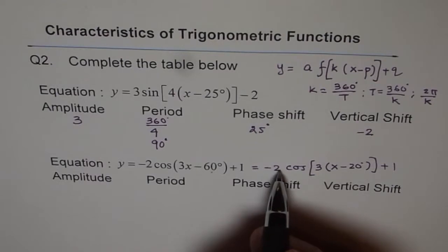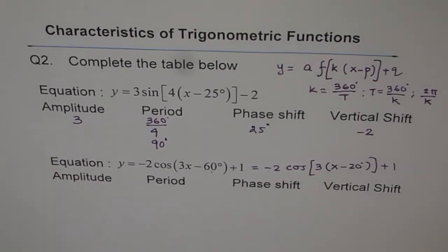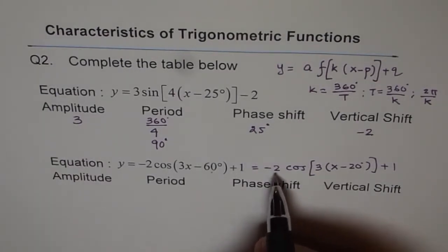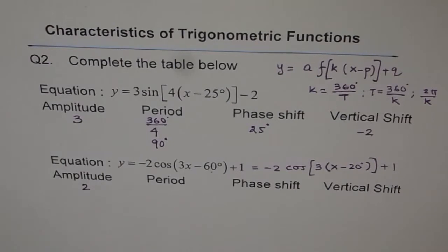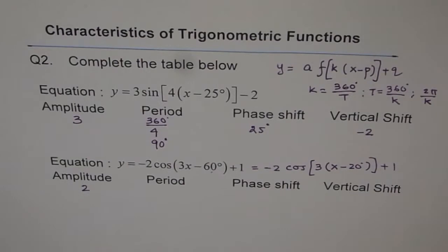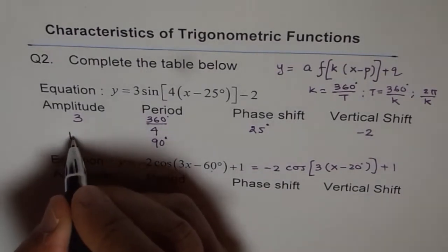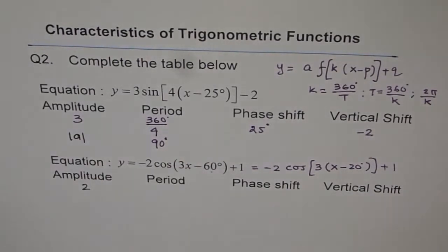And yes, minus 2. So amplitude, remember, I forgot to tell you that, it is always positive. How far do you go. It is kind of a distance. Don't write minus. That could be a mistake. Just write the absolute value of A. So let me write this here. So this is absolute value of A, not just A.